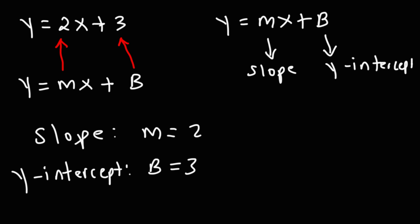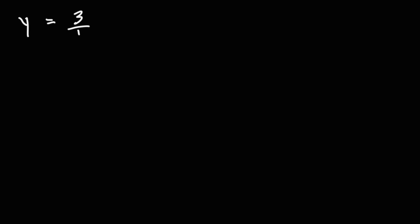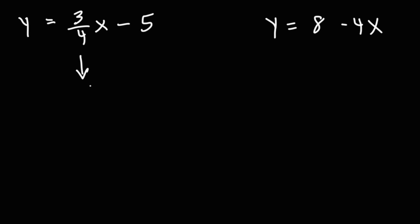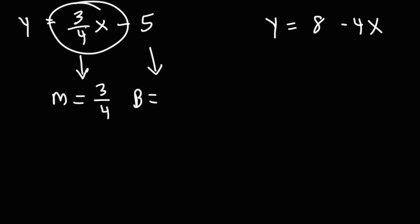However, not all examples are as simple as this, so we're going to cover a lot of examples in this video. Go ahead and try these two examples: y is equal to 3 over 4x minus 5, and y is equal to 8 minus 4x. For the first one, the slope is just the number in front of x, so the slope is going to be 3 over 4. And the y-intercept is the constant without the x, so it's negative 5.